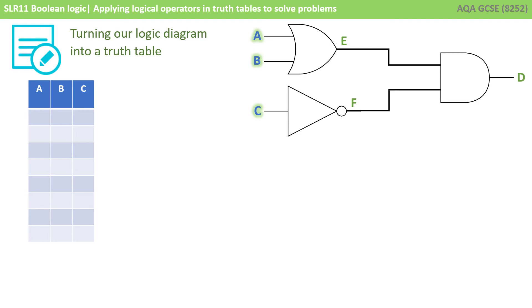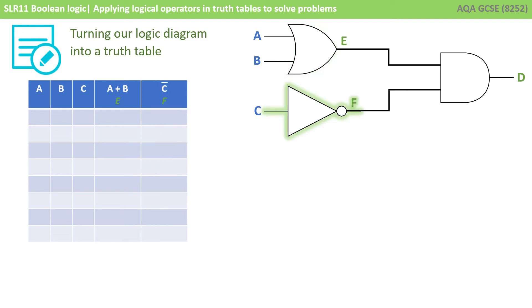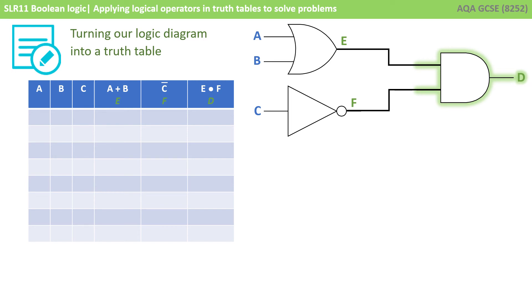The first thing to do is construct the various columns for our truth table. Let's start with all the inputs: A, B, and C — three columns labelled accordingly. We now need columns for our intermediary outputs: the output of A OR B, which we call E, and that becomes one input to our AND gate. Similarly, we have the output of NOT C, which we call F, the other input to the AND gate. Finally, we have our output D, which is the result of E AND F.